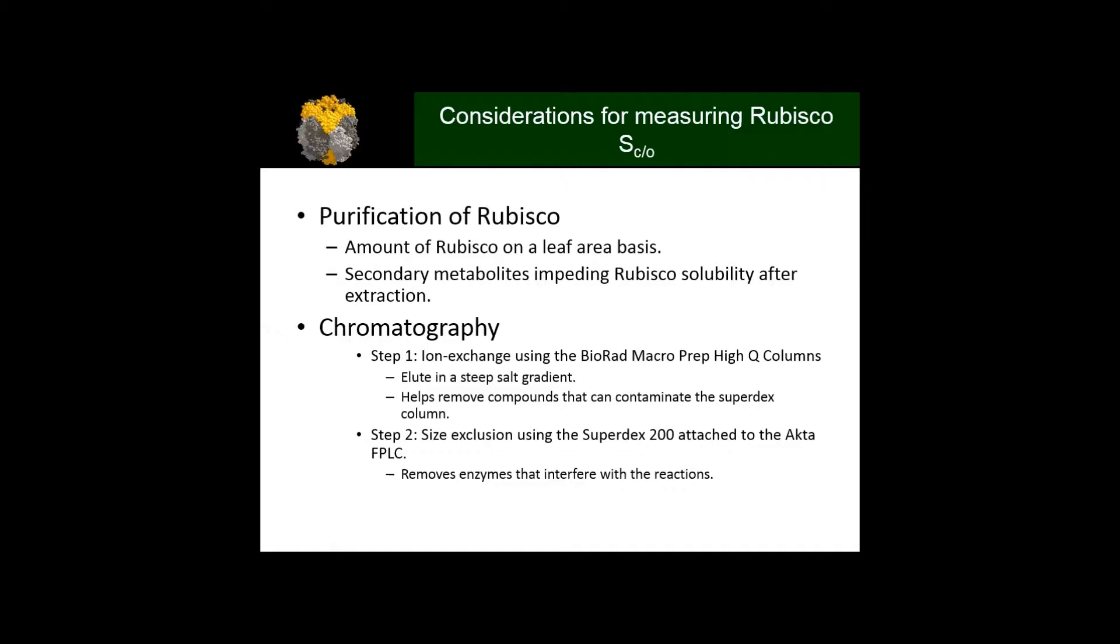Once we've sorted out extraction, we have two chromatography steps. The first is an ion exchange prep where we elute Rubisco off in a steep salt gradient using a Bio-Rad Macro-Prep High Q column. This removes nasty compounds that may block chromatography in the second step. The second step uses size exclusion. Rubisco is a large molecule in higher plants, about 550 kilodaltons, and a Superdex 200 separates this nicely from other plant proteins.